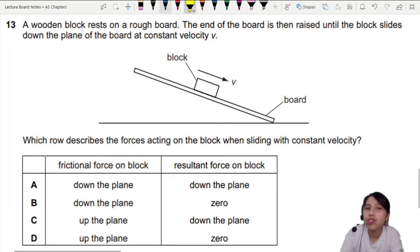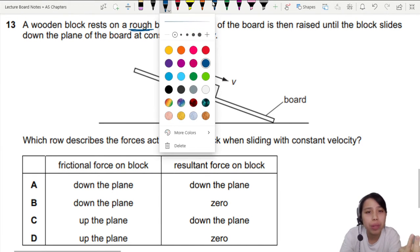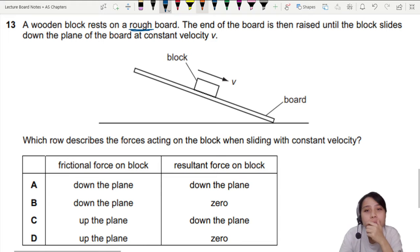Some clues you want to extract: firstly, a rough board. When you see a rough board, that means there's probably going to be friction happening here. And the second key thing to note is constant velocity. What does that mean?